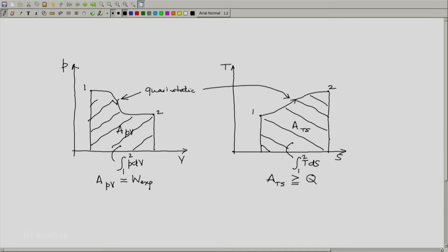Again we are encountering our second law inequality, the greater than or equal to here, and the moment we see that one should note that this equality will hold only when the process is reversible.